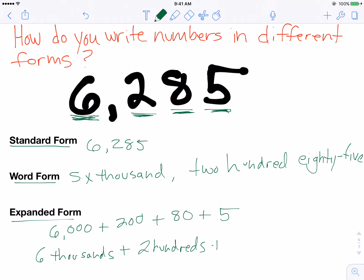And there are eight tens, so we would do plus eight tens. And there are five ones, so it would be plus five ones. And so that's how you can write numbers in different forms.